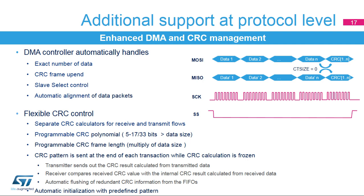The CRC frame length has to be equal to or a multiple of the data size. The CRC calculation is frozen during the CRC pattern transaction. Results from the transmitter CRC calculator register are loaded directly into the shift register, and the received CRC value is stored in the FIFO and compared with the receiver CRC result. Redundant CRC information is automatically flushed from the FIFOs. As the CRC registers are automatically initialized, the CRC can be used in DMA circular mode. Initialization patterns for the receiver and transmitter can be configured either to zero or to all ones. By this flexibility, a wide range of protocols is covered.